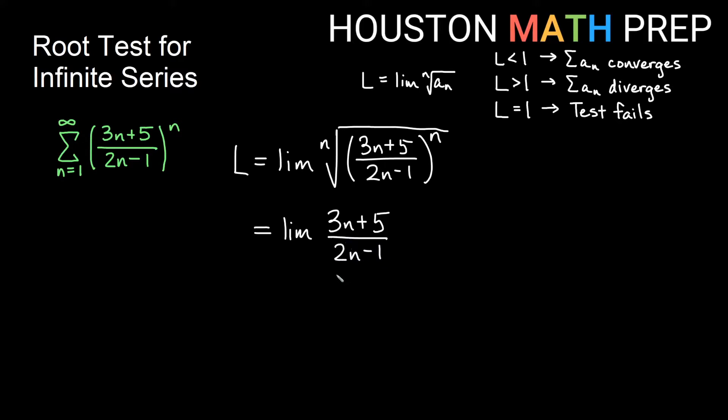And either one iteration of L'Hopital's rule or just comparing lead coefficients, because these have the same degree, we should get a limit of 3/2. And since this limit is greater than 1, we'll get that the original series diverges by the root test. And so this was just a very quick first example of how to deal with this.